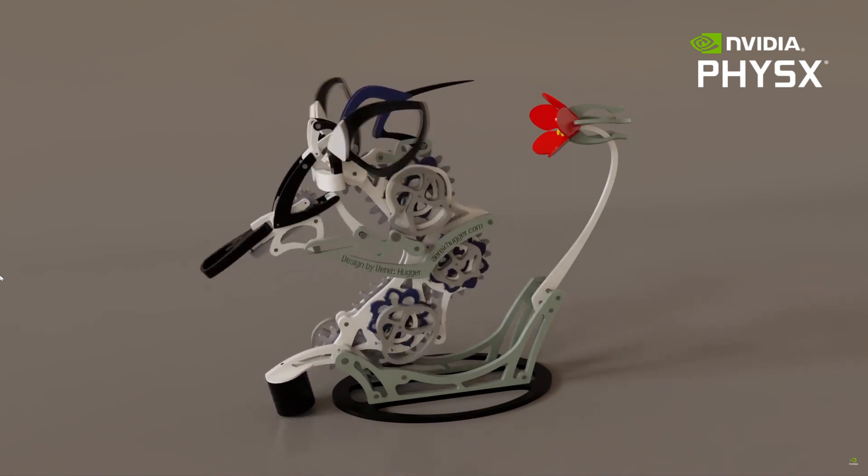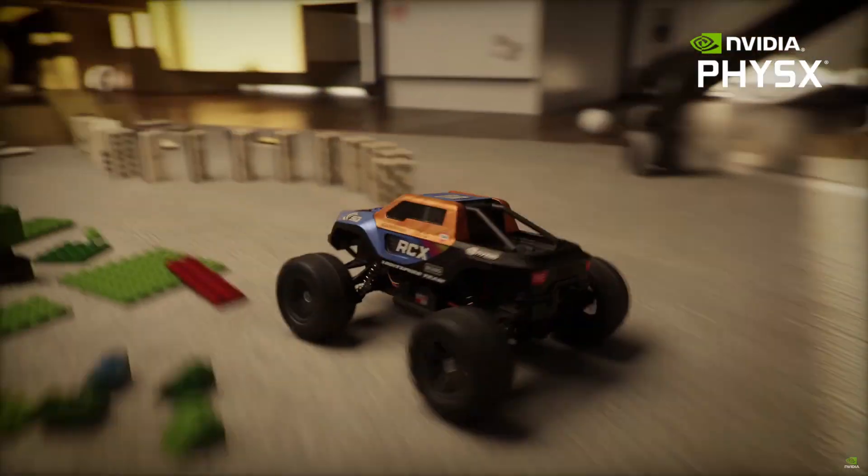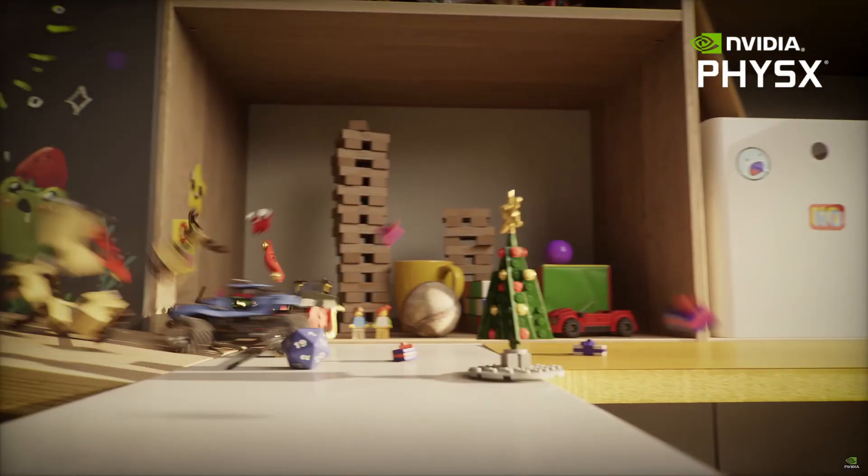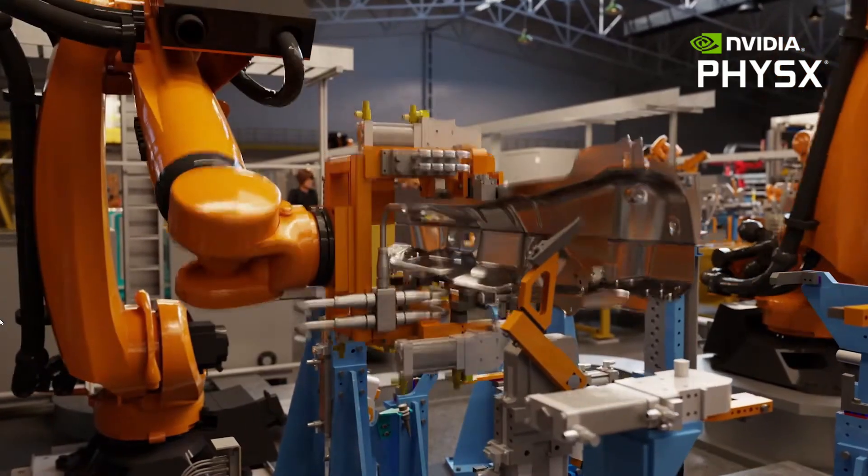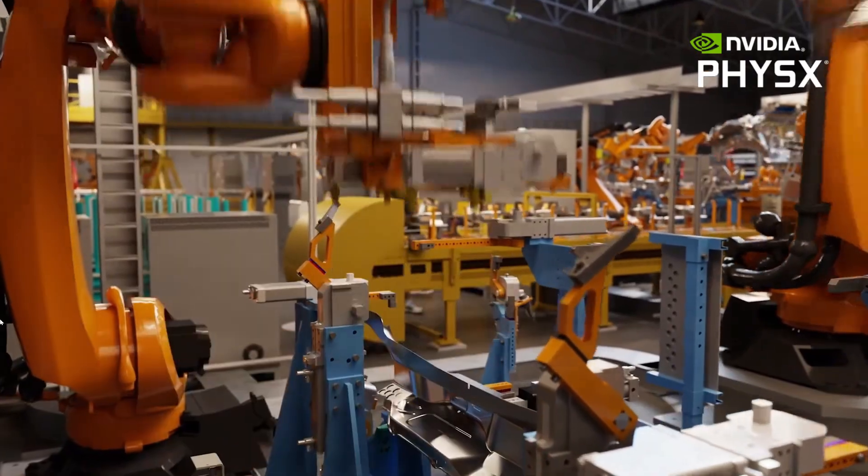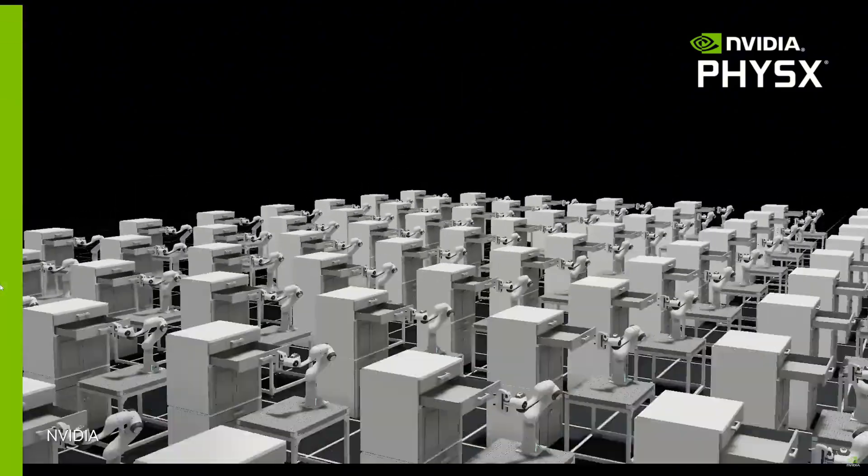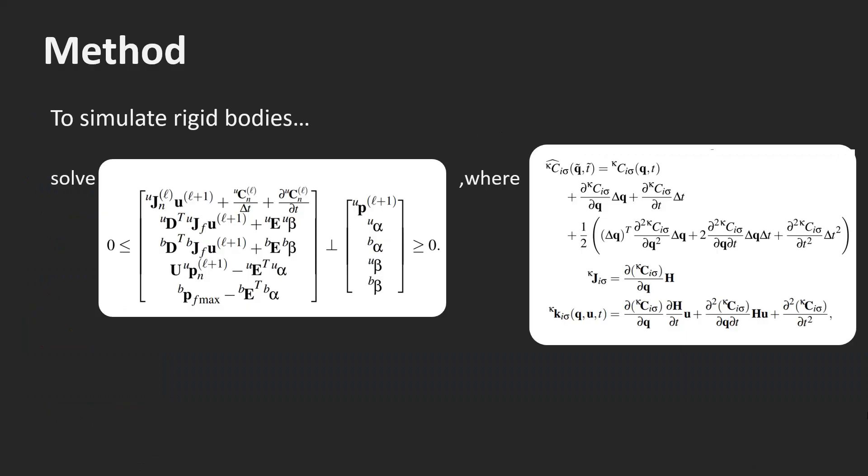PhysX allows the simulation of complex structures. It is used in real-time applications and games, but also for robotics simulations and digital twins. So now, let's start with the first tutorial on rigid body simulation.